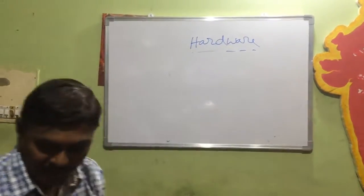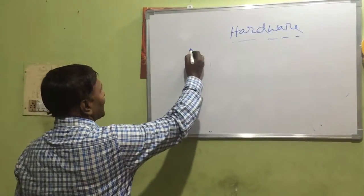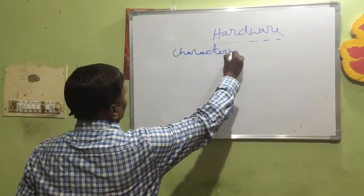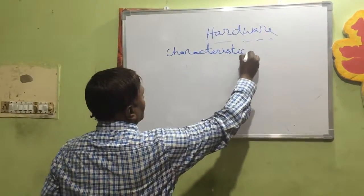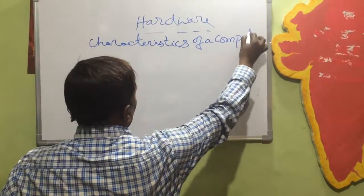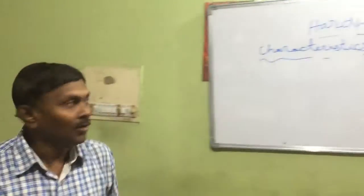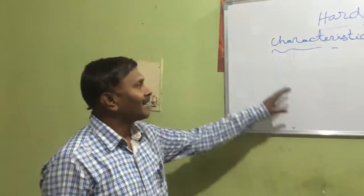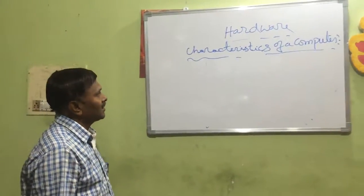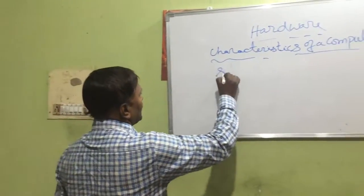Next, we will see what are the characteristics of a computer. Just like every human being has some characteristics, a computer is also having some characteristics. The first ones are: speed, memory power, accuracy, versatility, and delicacy.